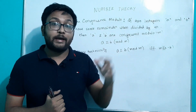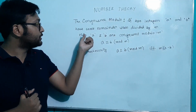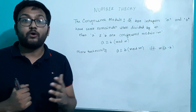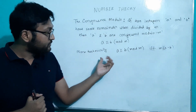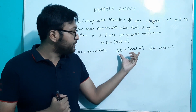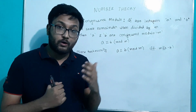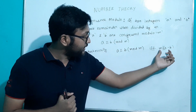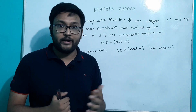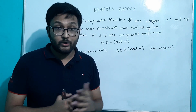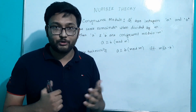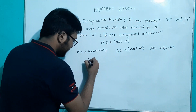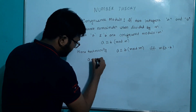Congruent modulo — we say a is congruent to b modulo m. If m divides (a - b), then we say they are congruent modulo. Let us look at an example. Let a be 15 (pononoro).